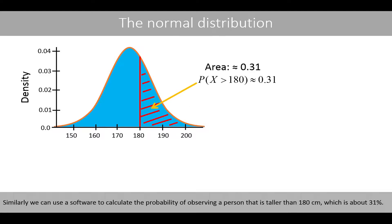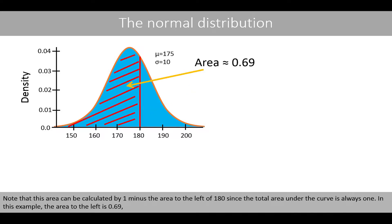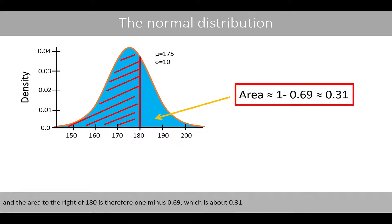Similarly, we can use software to calculate the probability of observing a person taller than 180 centimeters, which is about 31%. Note that this area can be calculated as 1 minus the area to the left of 180, since the total area under the curve is always 1. In this example, the area to the left is 0.69, so the area to the right of 180 is 1 minus 0.69, which is about 0.31.